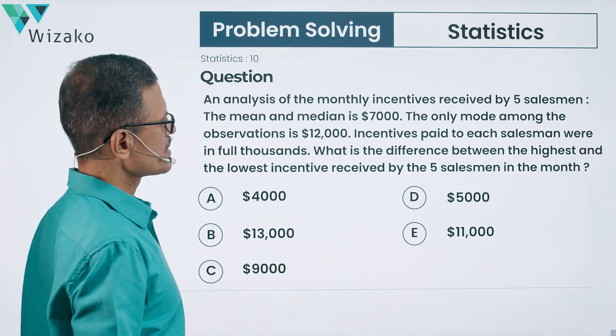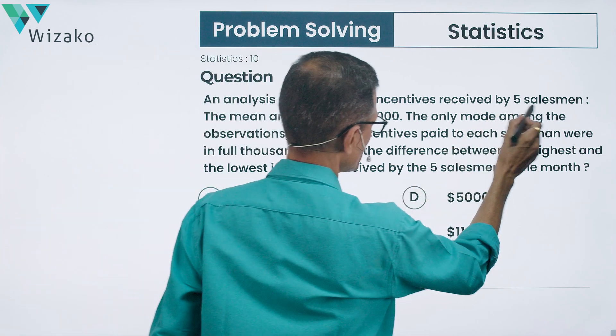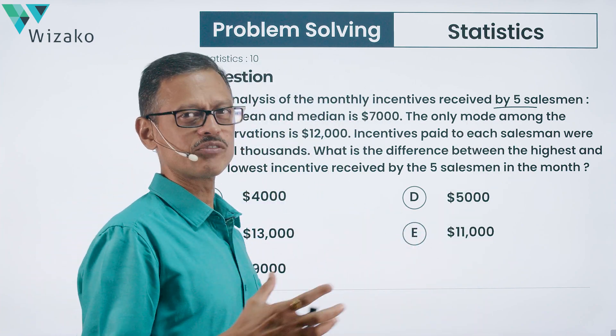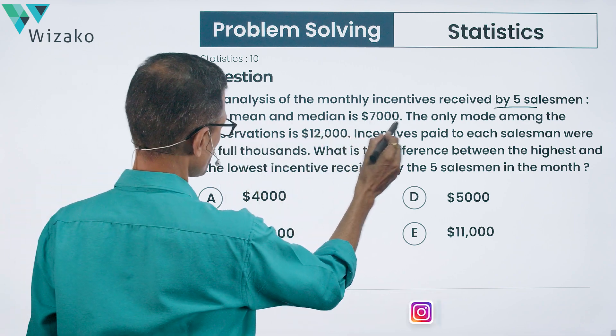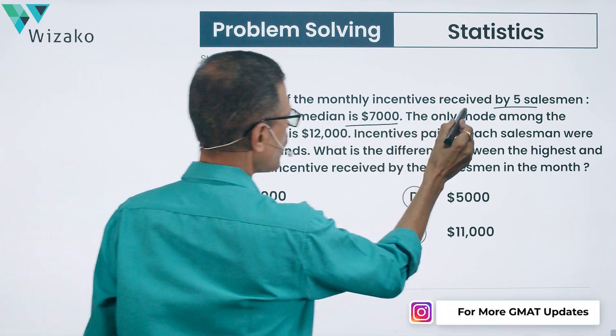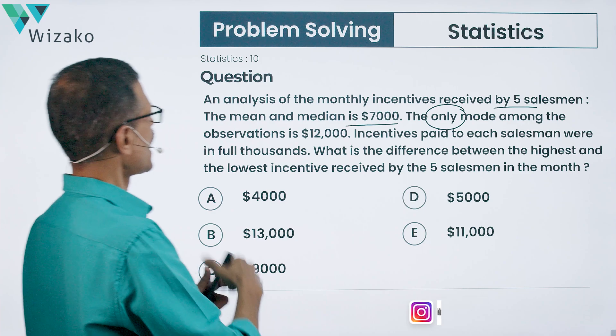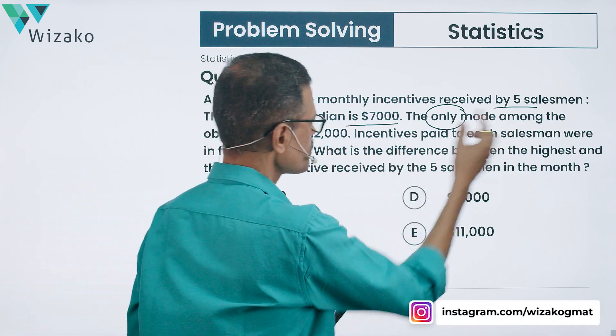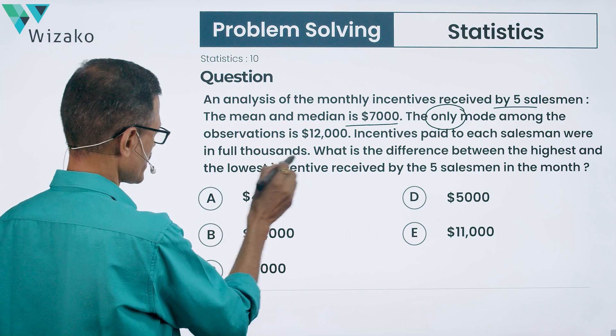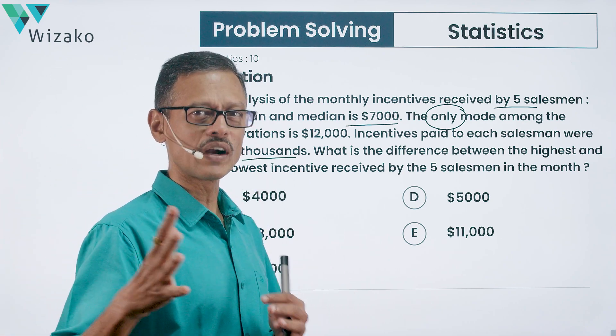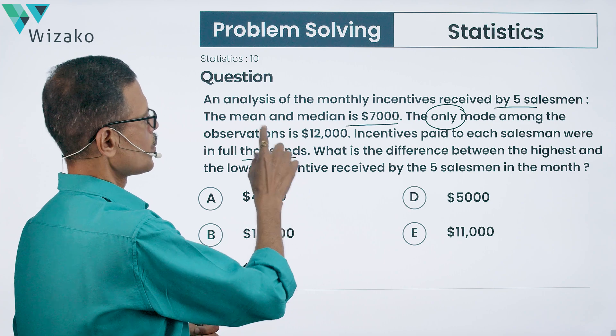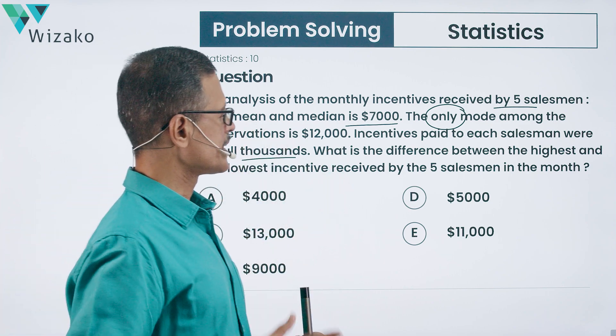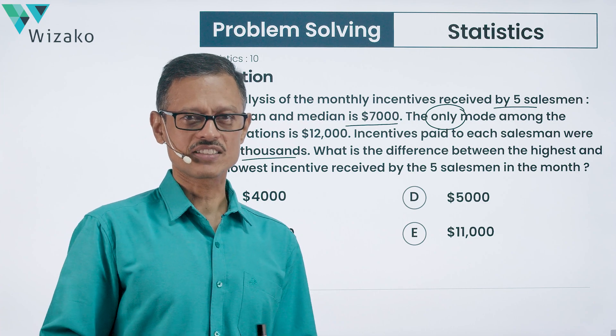The analysis of the monthly incentives received by five salesmen. So number of data points that we have is five, not too many. The mean and median is 7,000. The only mode among the observations is 12,000. Incentives paid to each salesman were in full thousands. So it could be 4,000, 5,000. It's not going to be 4,120 or some such number. What is the difference between the highest and the lowest incentive received by these five salesmen in the month is what the question is.